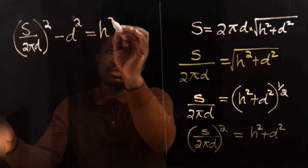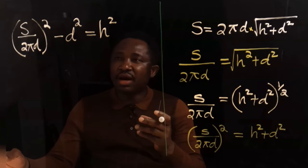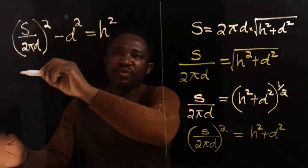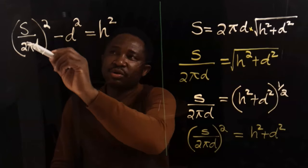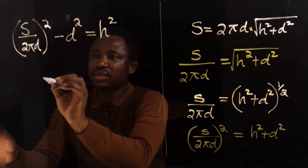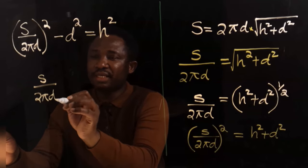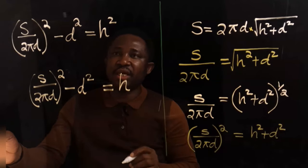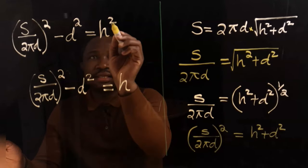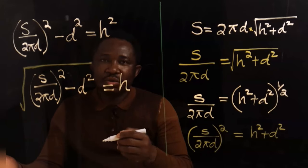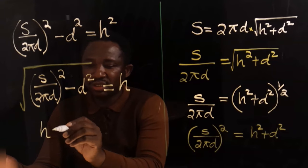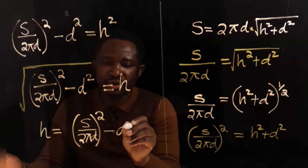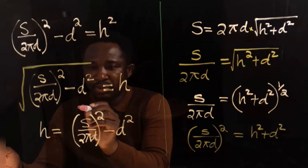Now we have h squared alone on this side. However, our aim is to make h the subject, not h squared. This square will move across the equal sign and become a square root. Hence we're going to have h equals the square root of s over 2πd, all squared, minus d squared. We can rewrite this with everything under the square root.